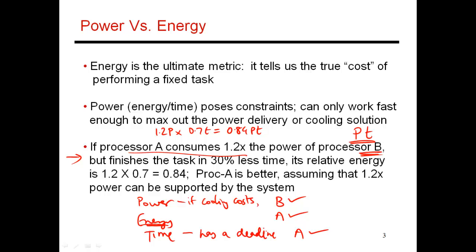There are different ways to pick processors. If performance matters, go with the higher-performing processor. If cooling cost matters, go with the processor that dissipates less power. If both processors meet the power and time criteria, go with the one that consumes less energy.